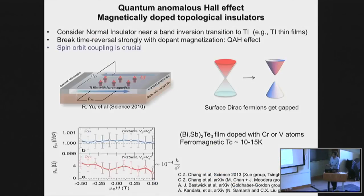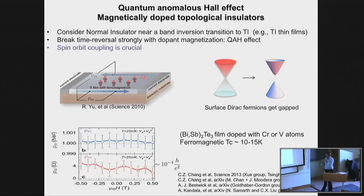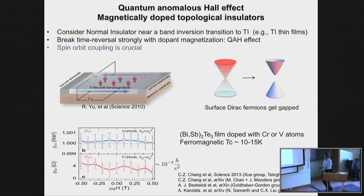In recent years, one place where this kind of physics has been realized is in topological insulator thin films, where one has a very small gap due to the thinness of the film, and one can undergo band inversion as a function of a certain magnetization introduced by dopant atoms. In the language of surface states, one can think of these magnetized atoms as gapping out the surface Dirac fermions. People have measured, going down to very low temperatures, fairly good quantization up to one part in 10^4 — not as good as the quantum Hall effect, but nevertheless fairly good precision.